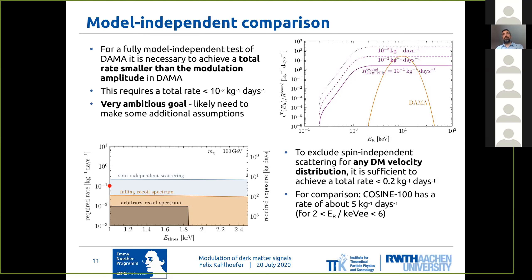So likely there need to be some model-dependent assumptions. One thing that you could do, for example, is to fix the particle physics model to spin-independent scattering, but allow completely arbitrary dark matter velocity distributions. And you can show that in this case, it would be sufficient to achieve a total rate of the order of 0.2 events per kilogram per day in order to exclude any interpretation of DAMA in terms of spin-independent scattering.